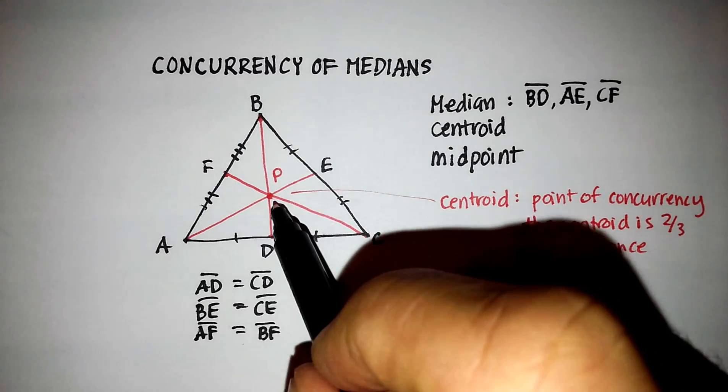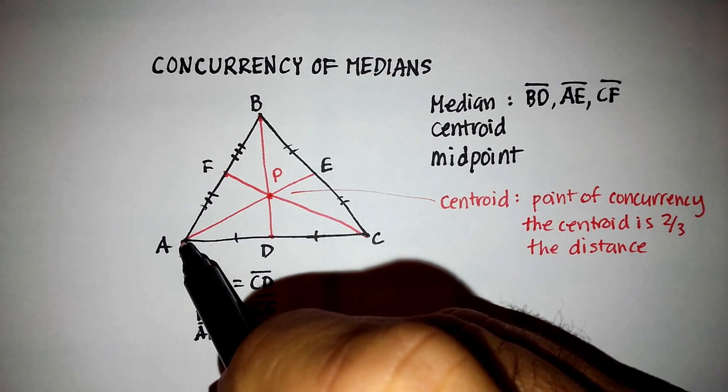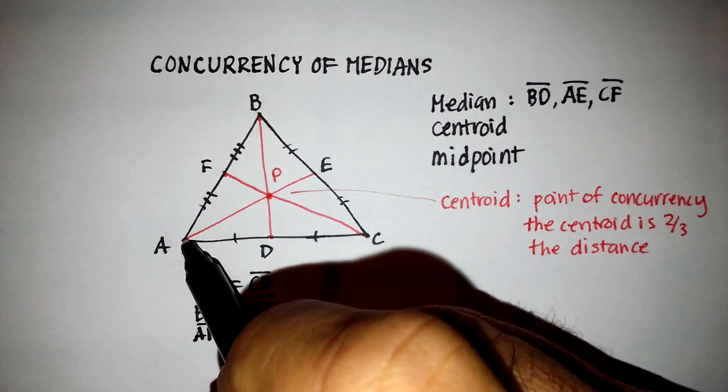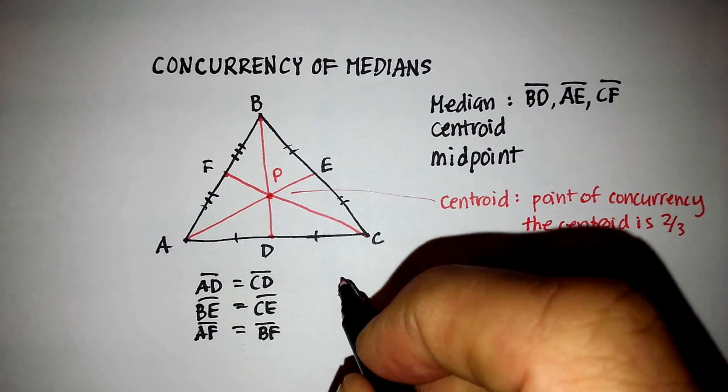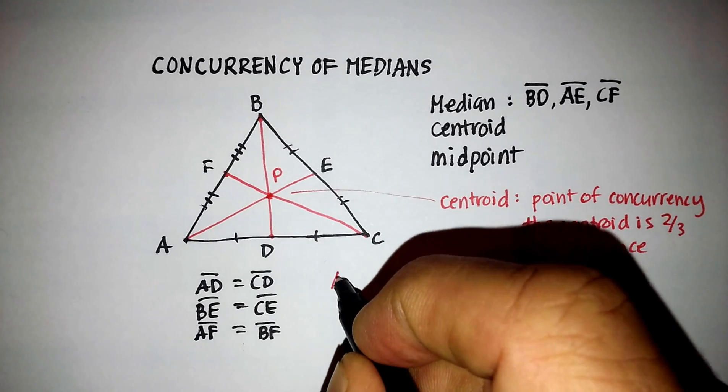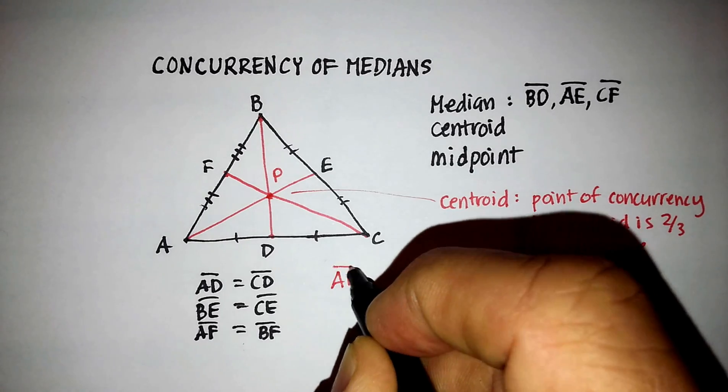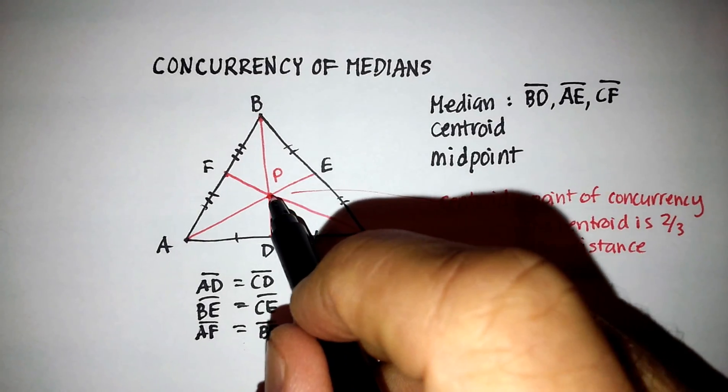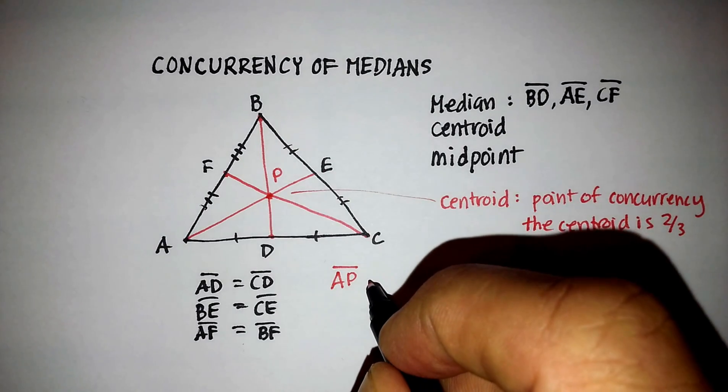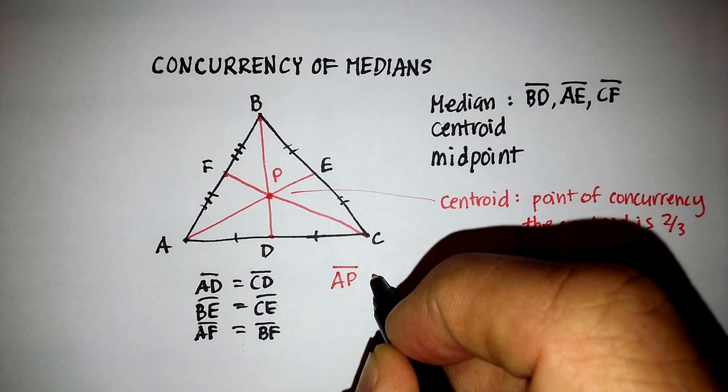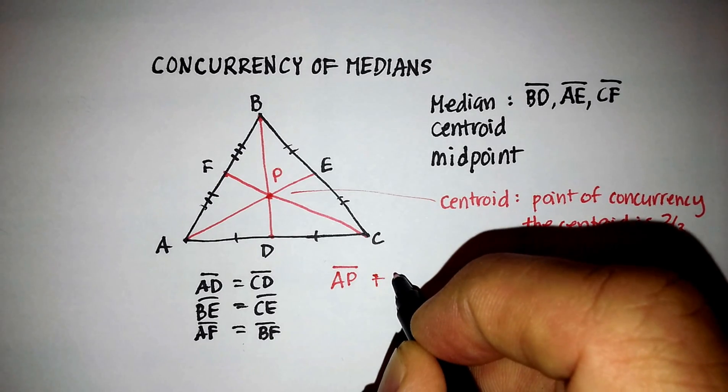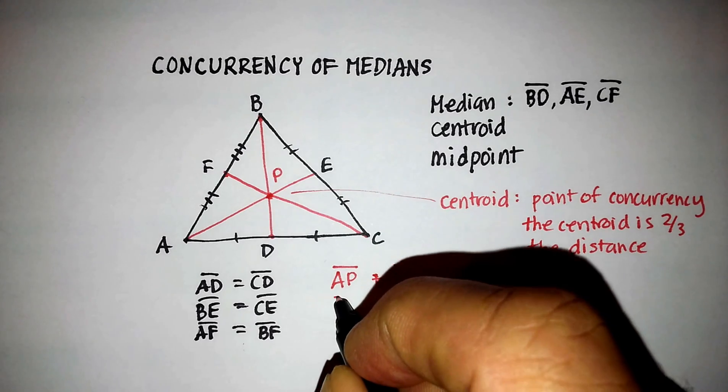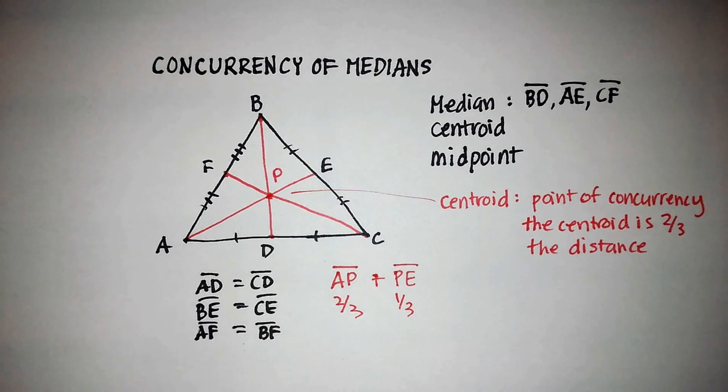So for example, point P is two-thirds the distance from A to E. All right. So we know then that AP, line segment AP, is two-thirds and P, line segment PE. So this would be two-thirds. This would be one-third.